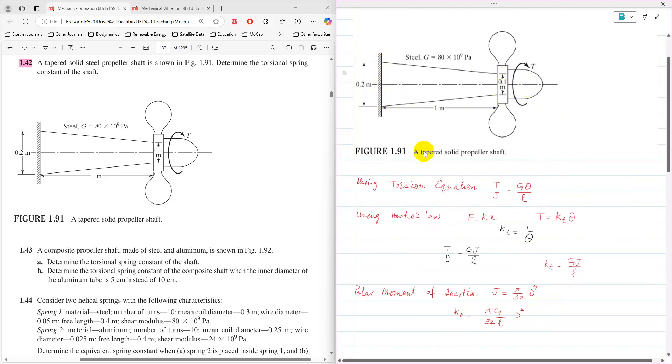But in this case, the shaft is not uniform, and as the shaft is not uniform, so this formula KT pi G over 32 L into D cannot be used directly here.